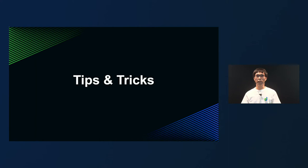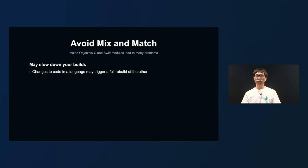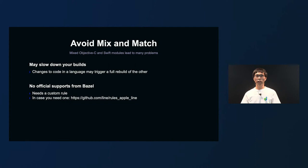Now, I'll introduce you to some tips and tricks for iOS build with Bazel. First, avoid mixed Objective-C and Swift modules as much as possible. It goes the same way as building with Xcode, but with a mixed Objective-C and Swift module, a code change in one language may trigger a full rebuild of the other language code, which could slow down the build. It may be hard in an existing codebase, but try to avoid mixed language modules as much as possible.